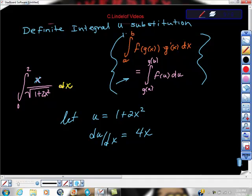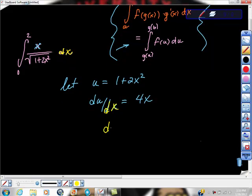I'm going to solve for DX, and the reason I'm solving for DX is I'd like to replace this yellow DX right here with this one here. So if you just do this algebra, you'll find that DX is the same as DU over 4X.